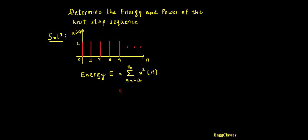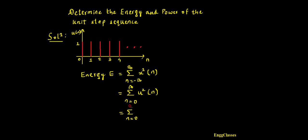Now, x(n) is nothing but u(n). Since u(n) starts from 0, the lower limit becomes 0 and the upper limit is infinity. So I need to consider the amplitude squared, that is u squared of n. Summation n equal to 0 to infinity.